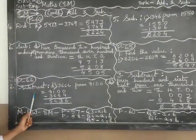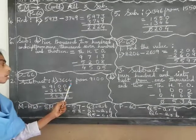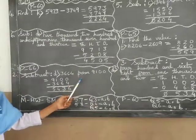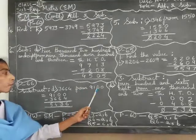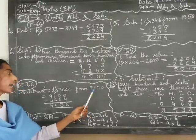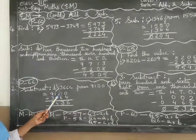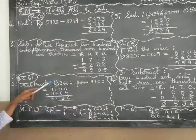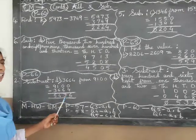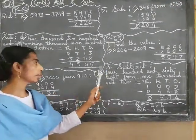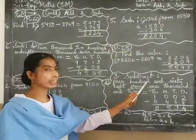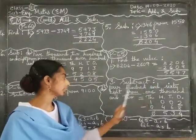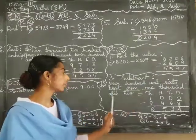Here we go to page 66, question 2. Subtract 3,664 from 9,100.